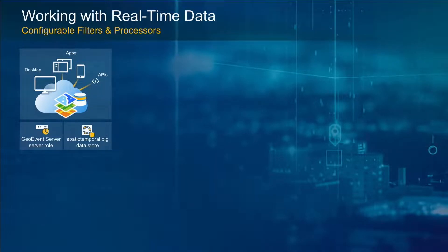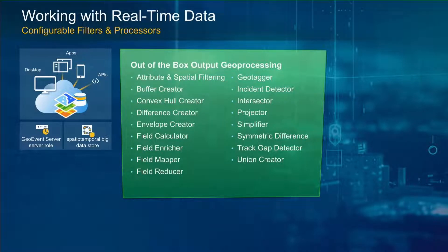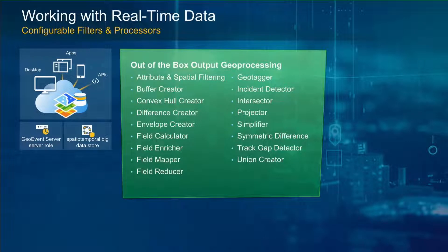Part of the real value of GeoEvent Server is not just ingesting and sending data, but enriching it on the fly with on-the-fly analysis. We can do attribute and spatial filtering — for example, looking for a vehicle that's speeding, but only if it's speeding within a residential area. Or for a temperature sensor, you might not care about 100 degrees on the loading dock, but you're very concerned if it's 100 degrees in your server room. You can combine these conditions together.